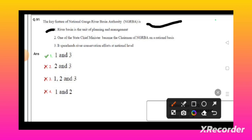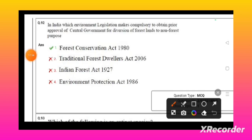In India, which environmental legislation makes it compulsory to obtain prior approval of central government for diversification of forest land to non-forest purpose? The Forest Conservation Act 1980.